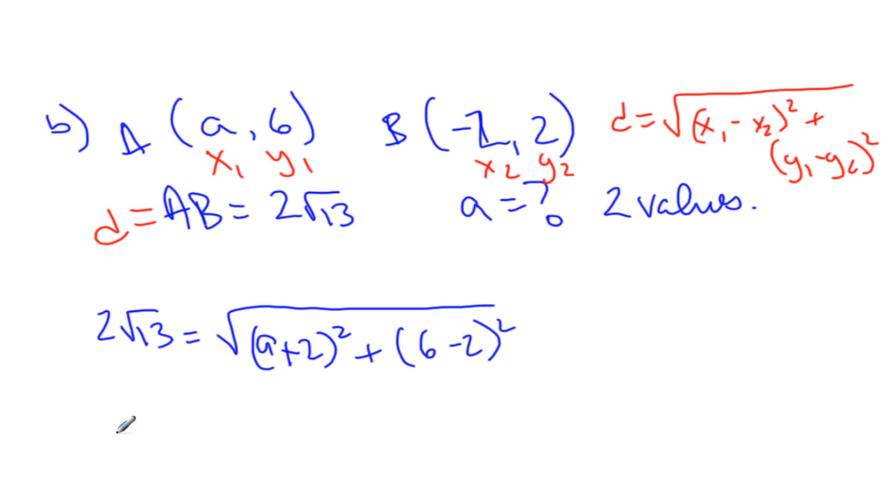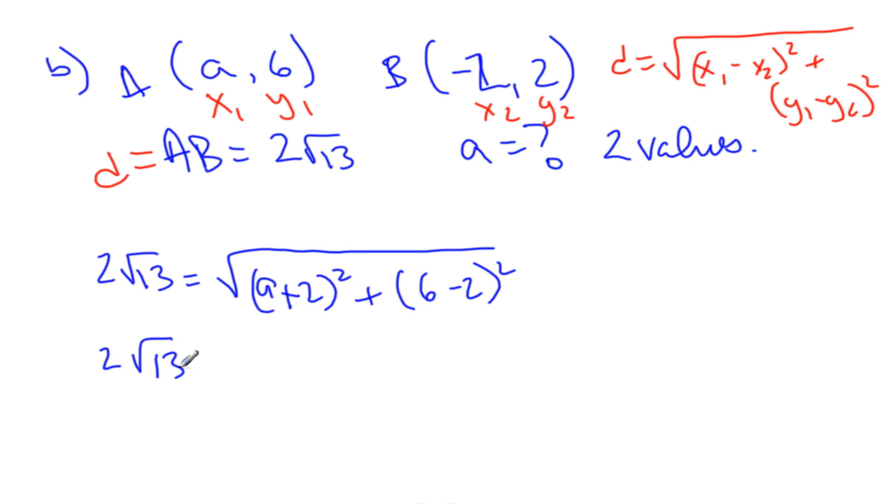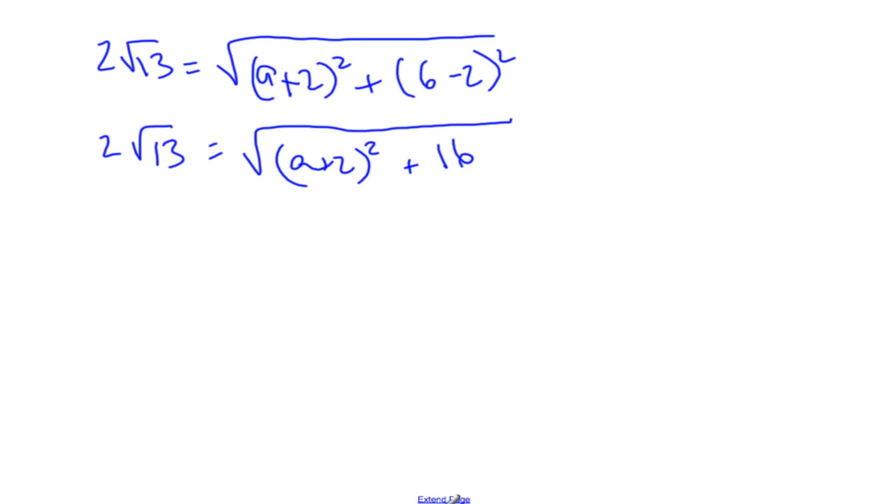Alright. So now, let's tidy it up a little bit. 2 root 13 equals square root of A plus 2 squared plus, that's 4 squared is 16. Alright. So now, I have a square, I need to get A. I got to get rid of the square root somehow. In order to get rid of a square root, I have to square it. So I'm going to square, if I do it to one side, do it to the other side. So when I square both sides, the square root goes away and I have A plus 2 squared plus 16. And over here, well, that's 2 squared times root of 13 squared. So what's that? 4 times 13? 4 times 13 is 52 equals A plus 2 squared plus 16.